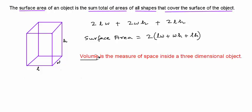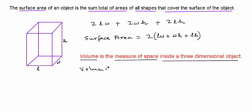Volume is the measure of space inside a three-dimensional object. And for a rectangular prism, we have the volume as the product of its length, width, and height. Containers have something called a capacity, which is a measure of the amount of liquid they can hold, and the capacity of a container is essentially the same as the volume of the container.